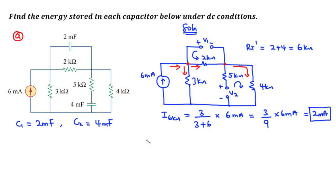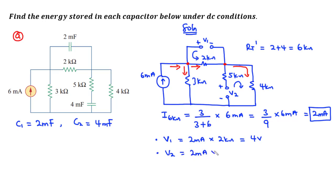We can now find V1 and V2. V1, the voltage across the first capacitor, equals 2 mA times 2 kΩ, which gives 4 volts — note that milliamps and kilohms compensate each other. Similarly, V2 equals 2 mA times 4 kΩ, giving 8 volts. So the voltage across C1 is 4 volts and the voltage across C2 is 8 volts.